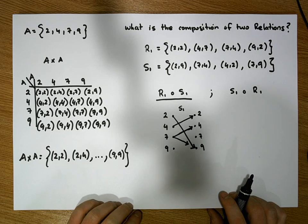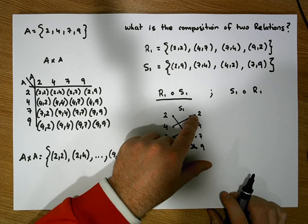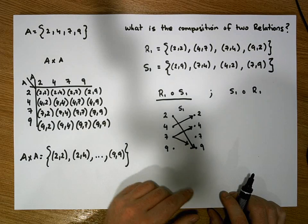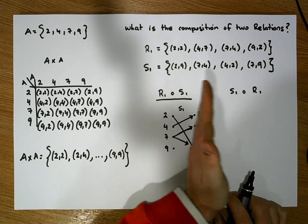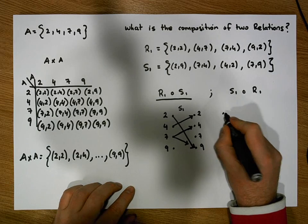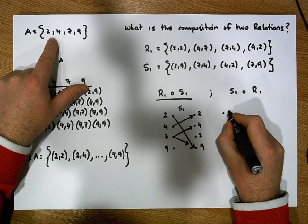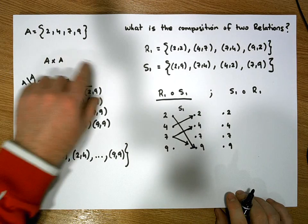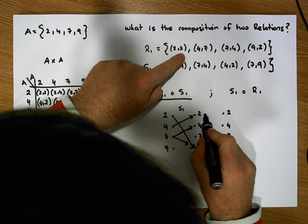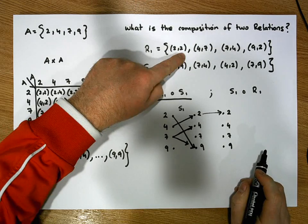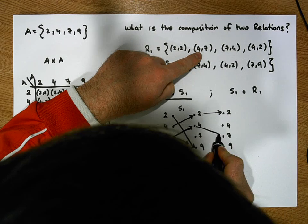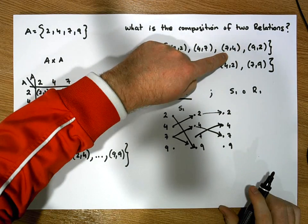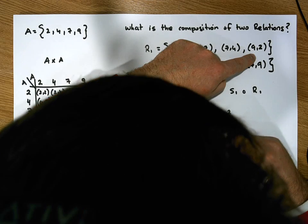Now let's do the mapping for R1. The domain values are 2, 4, 7, and 9, and the range values are again 2, 4, 7, and 9. R1 tells us 2 should be mapped to 2, 4 should be mapped to 7, 7 should be mapped to 4, and 9 should be mapped to 2.